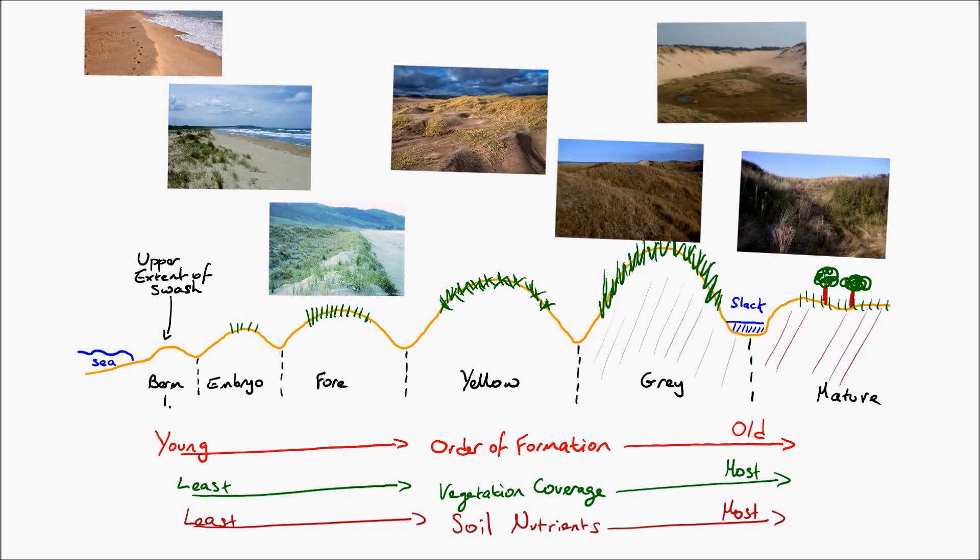You can see from the photograph that I'm loading over here what each of these dunes look like. I'm labeling them one to six and I've also added the slack over there which is that section between the gray dunes and the mature dunes where water is actually trapped.